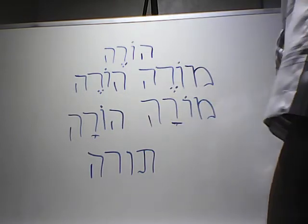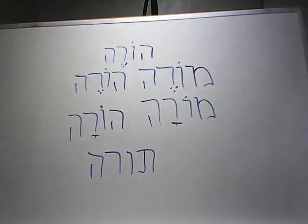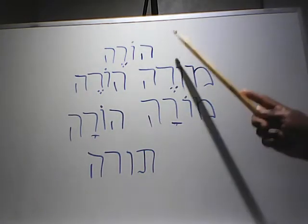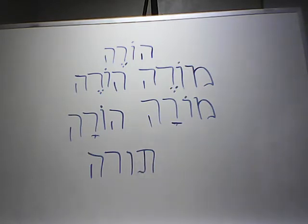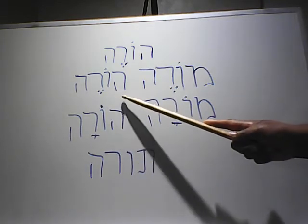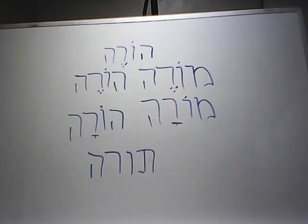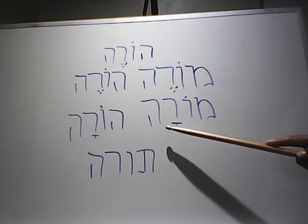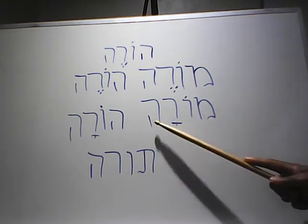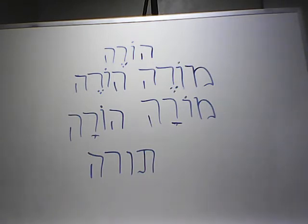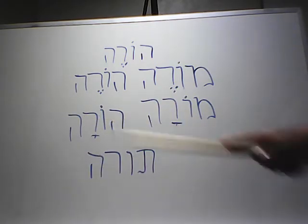Hora meaning female parent. So what do we see so far: hora in root meaning 'to teach' — the verb; more — a teacher, a male one; hora in this case treated as a noun — the male parent; then mora meaning female teacher; then hora — a parent that's female.